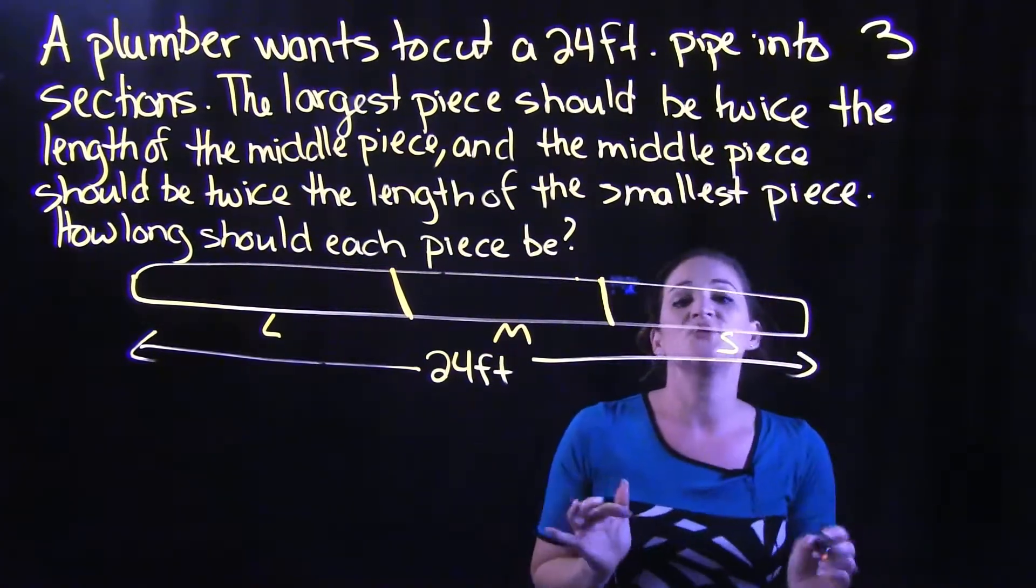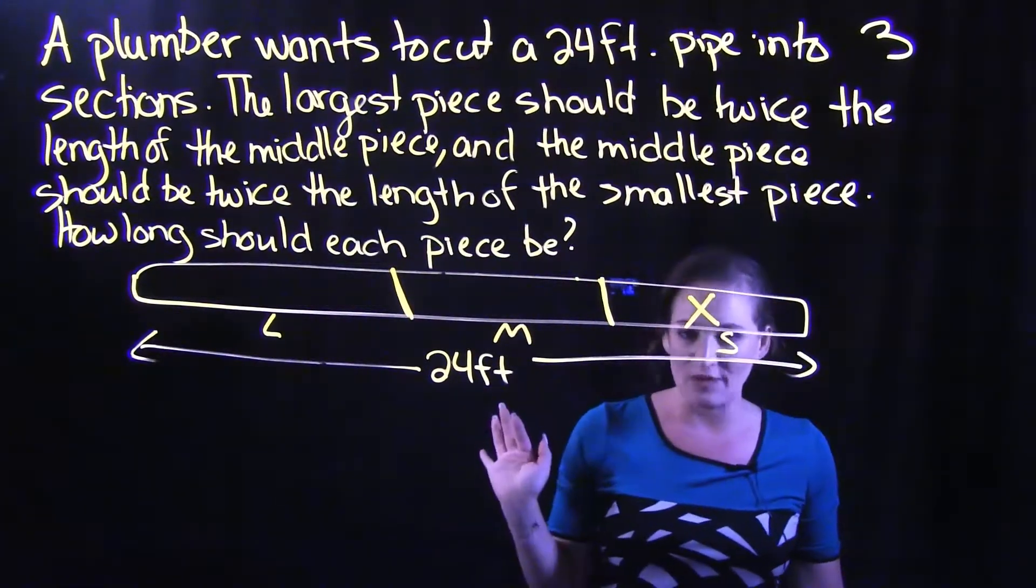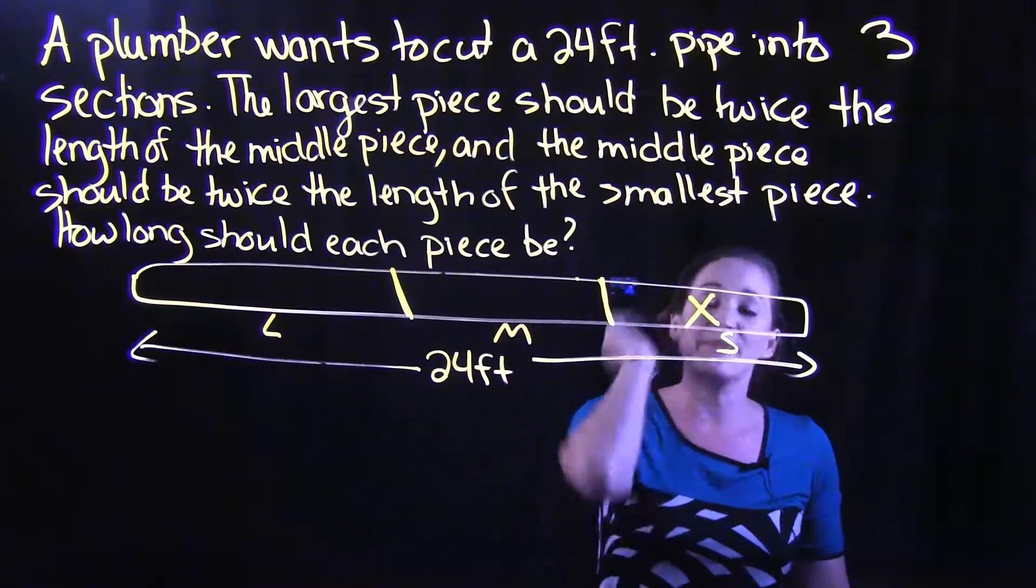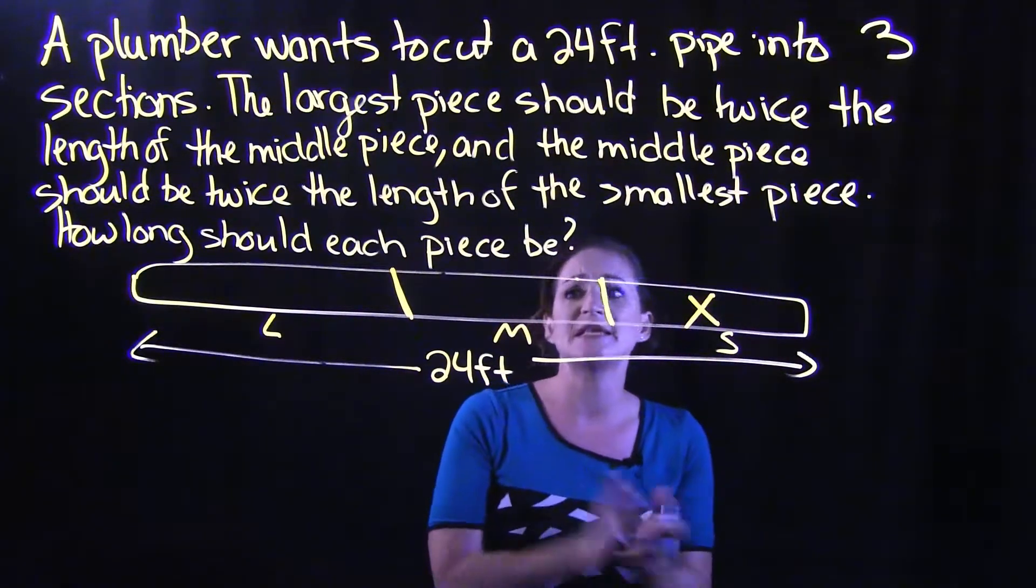So what I'm going to do is I'm going to label my small piece X. I have absolutely no information about the small piece. I'm going to say that's X. So if the small piece is X, let's see if we can then backtrack and find the middle piece and find the large piece.